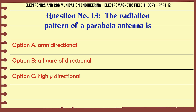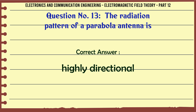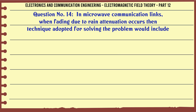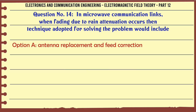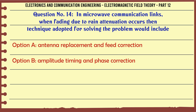The radiation pattern of a parabola antenna is: A. Omni-directional, B. A figure of directional, C. Highly directional, D. None of the above. The correct answer is Highly directional.